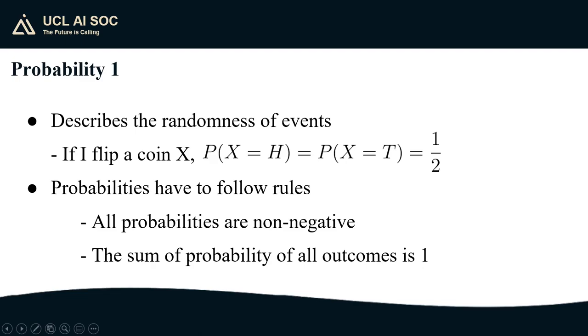In this rigorous framework probabilities have to follow rules. All probabilities have to be non-negative. I cannot say that the probability that my coin lands tails is negative 2 and also the sum of the probabilities of all outcomes should be 1. That is the coin will either land heads or tails and if I want to account for it landing on its edge I need to reduce the probabilities of the first two happening.